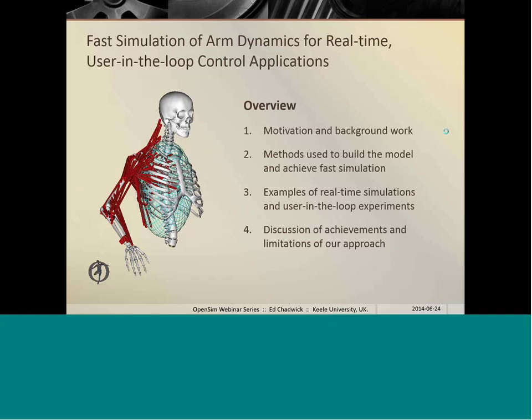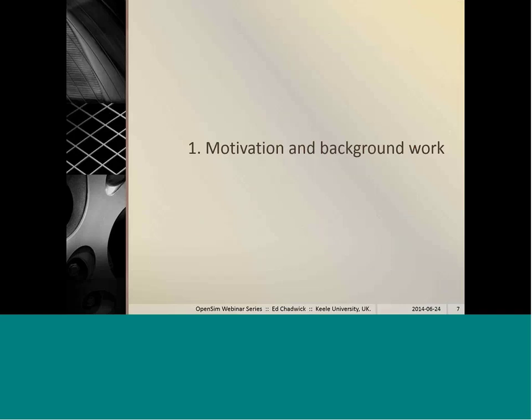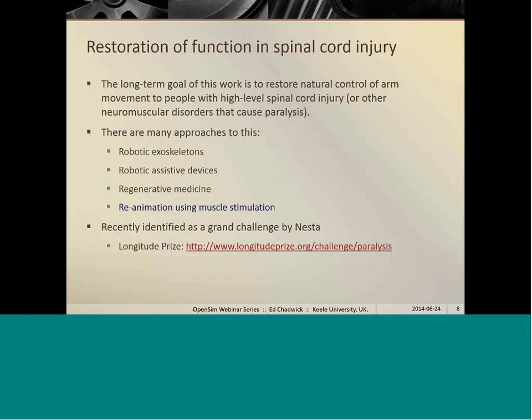So to start off with, why do we want this kind of fast simulation? What are we going to do with that? The overall goal of our research consortium is really to restore natural control of arm movements in people with high-level spinal cord injury or other types of neuromuscular disorders that cause paralysis. I mention other types because one of the examples I'm going to show later is actually brainstem stroke.